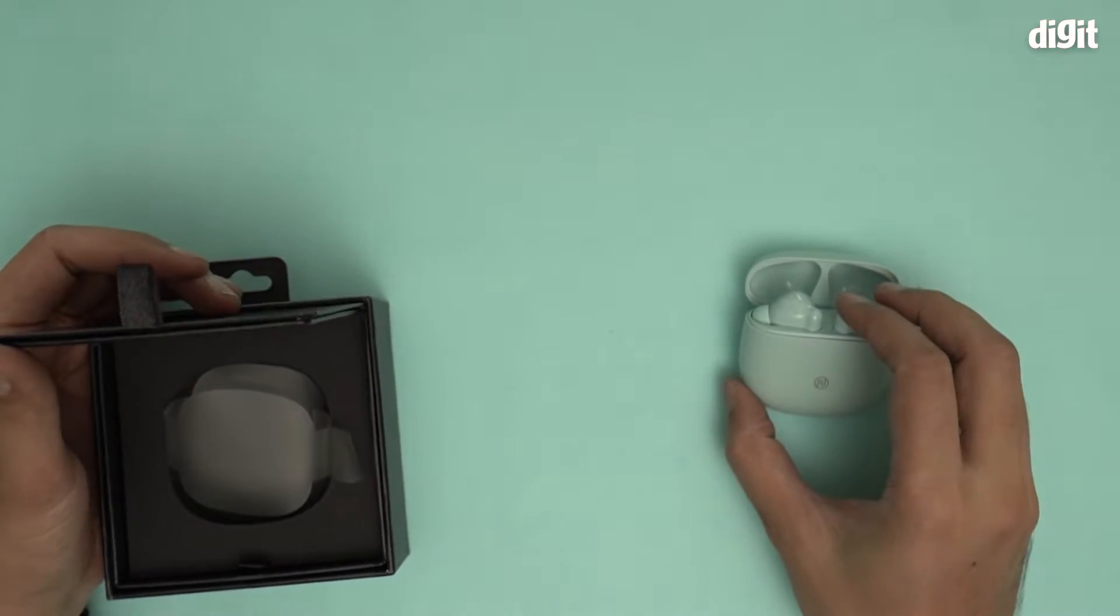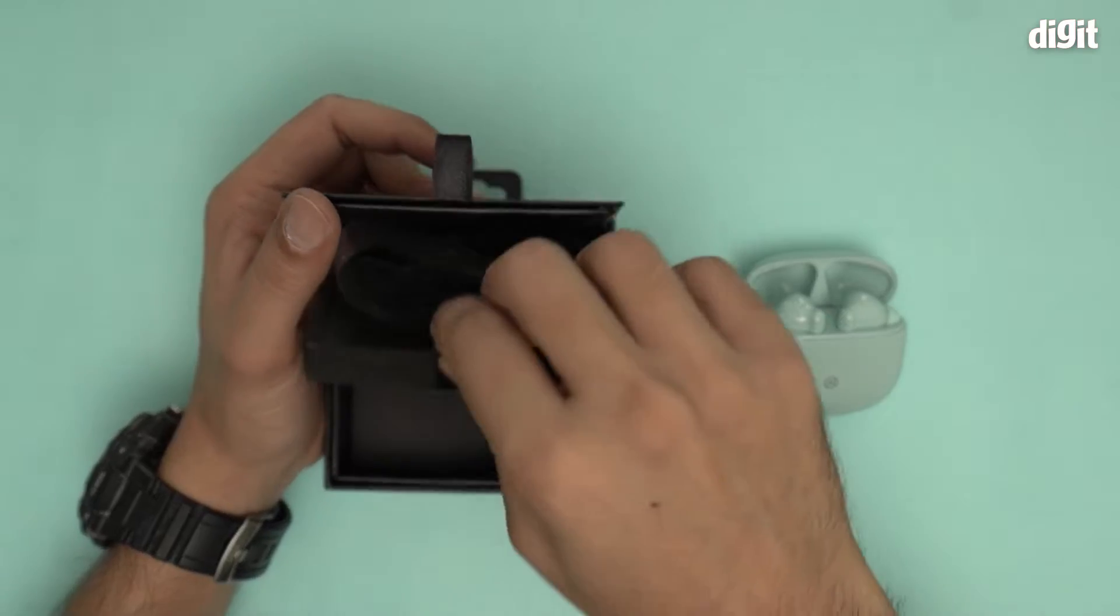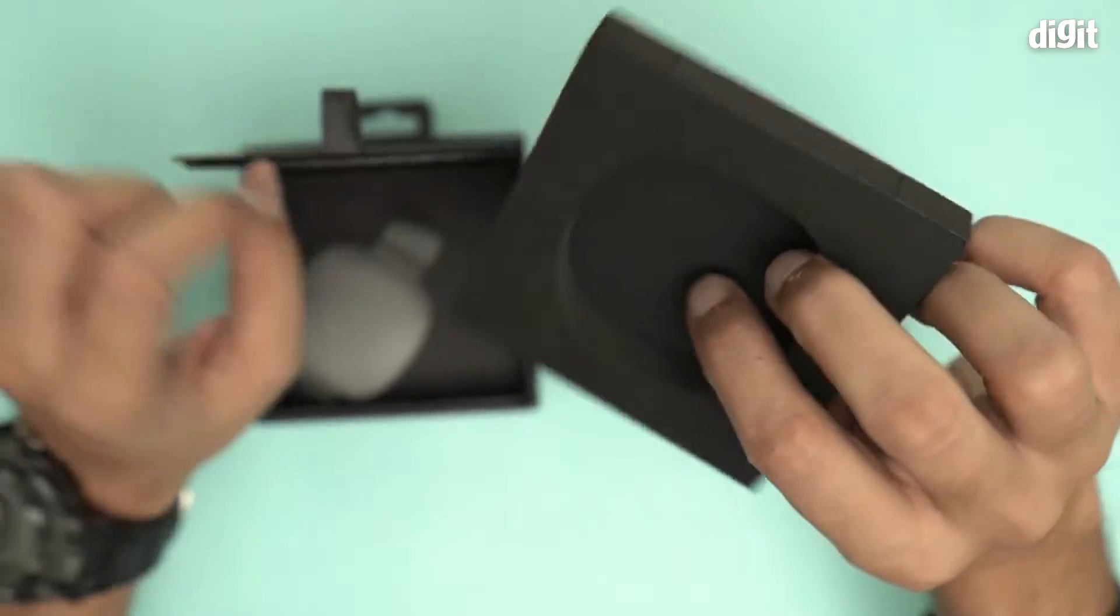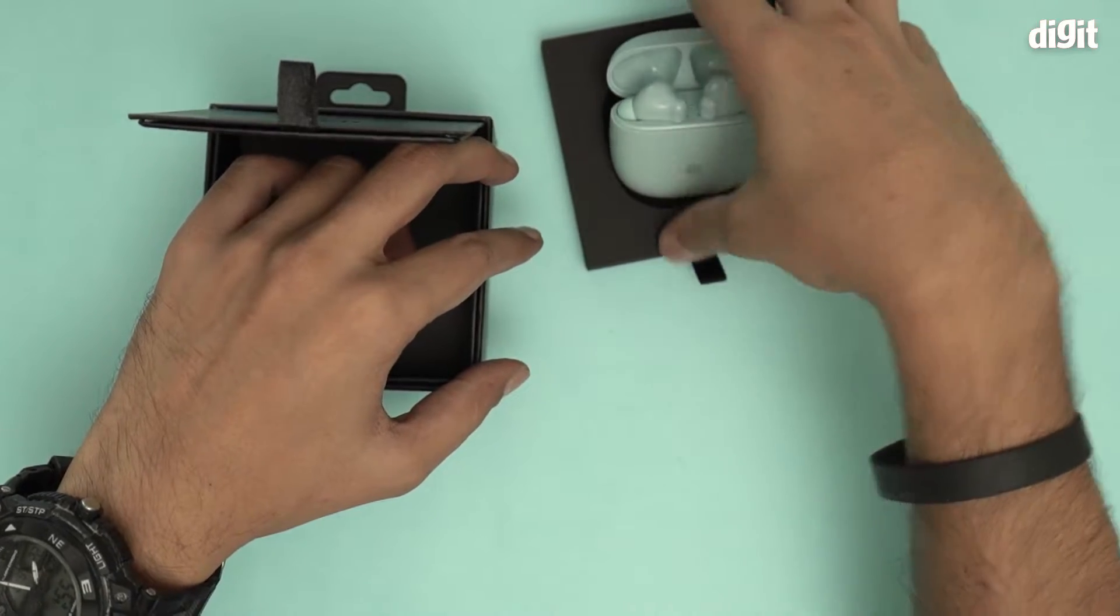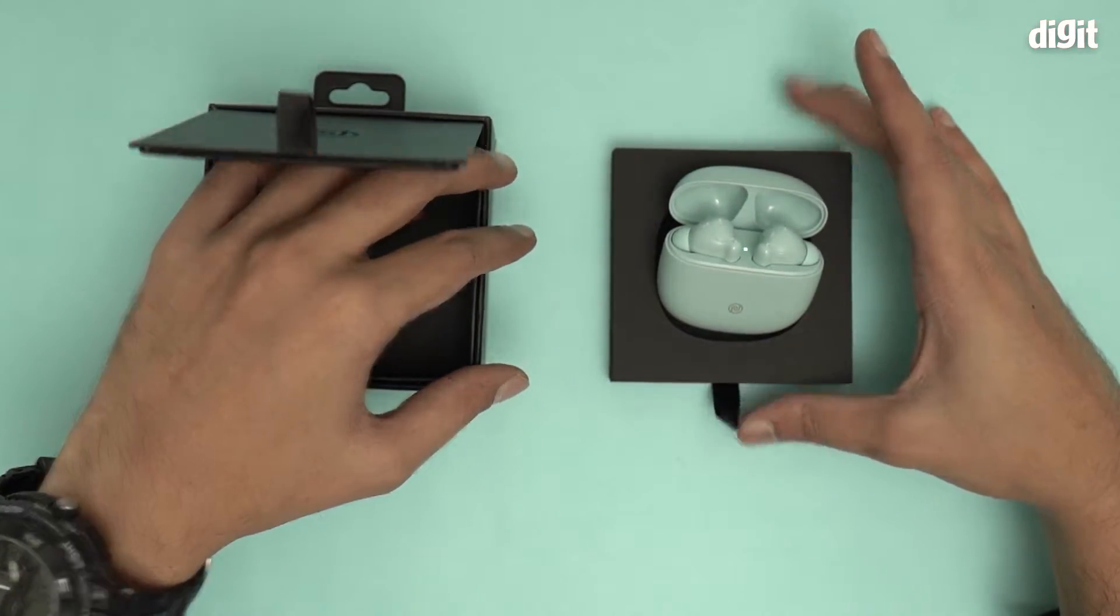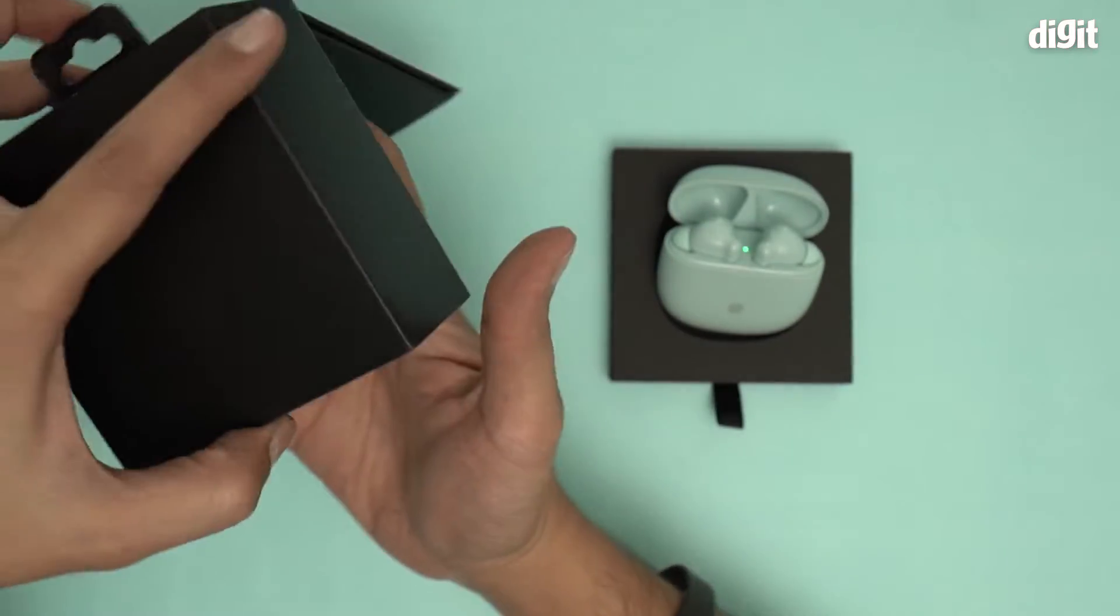And see what else is in the box. There's another lid over here and this looks like a box. I don't know what this box has. There seems to be another box at the bottom. I'll try and get this out, it's a little tricky.